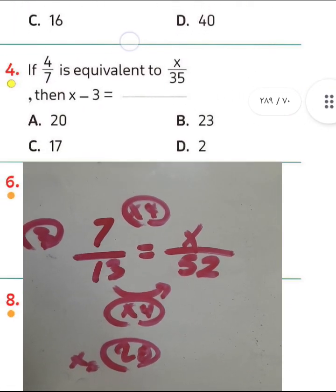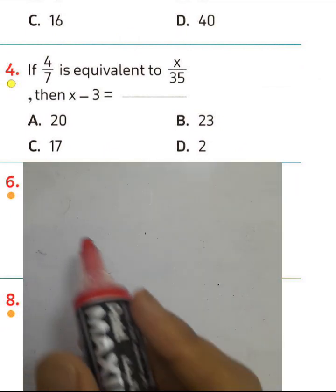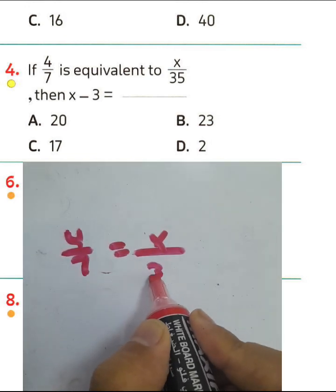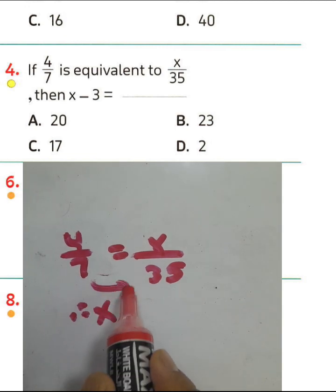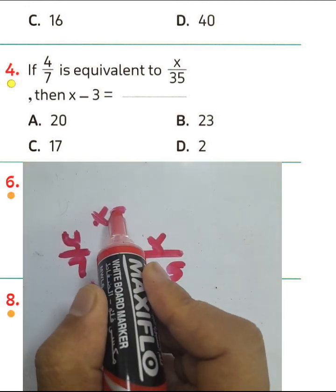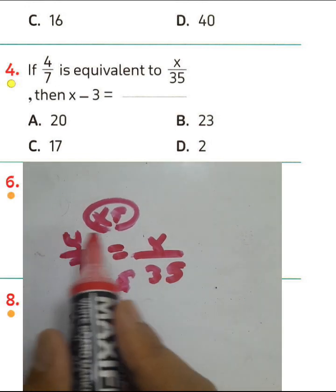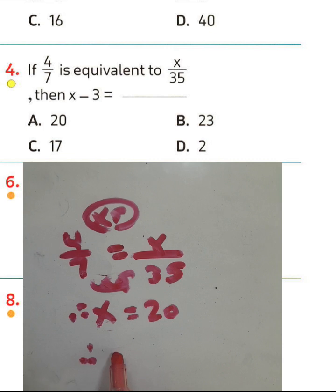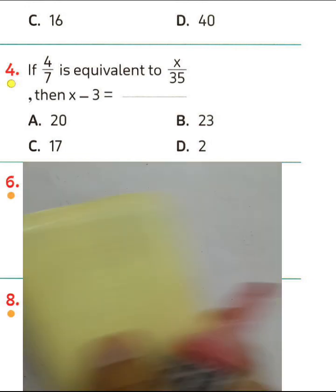Question number 4: we have 4 over 7 equivalent to x over 35. We multiply by 5 here: 5 times 7 equals 35, and 5 times 4 equals 20, so the value of x equals 20. But we need to find x subtract by 3, so 20 minus 3 equals 17. The result is 17.